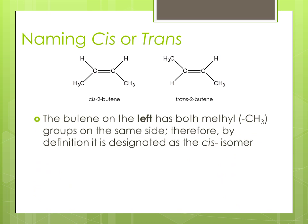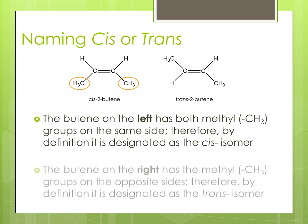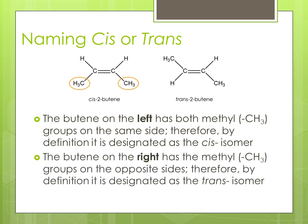Naming cis or trans. The butene on the left has both methyl groups on the same side. Therefore, by definition, it is designated as a cis-isomer. The butene on the right has methyl groups on the opposite sides. Therefore, by definition, it is designated as a trans-isomer.